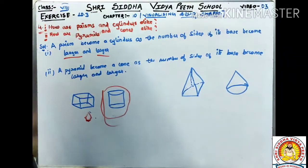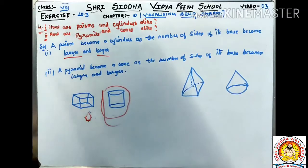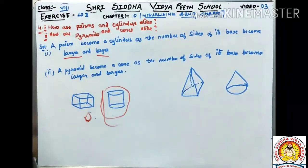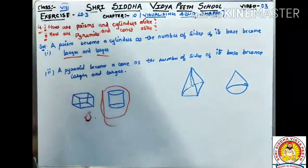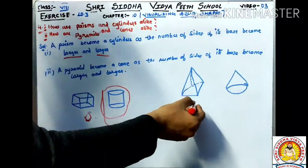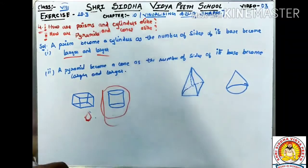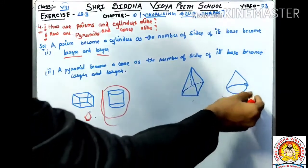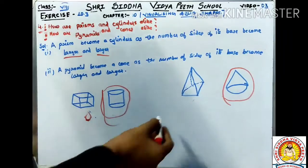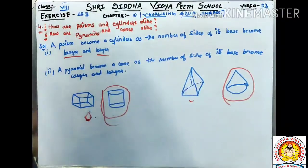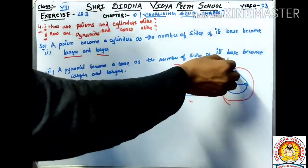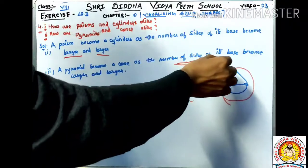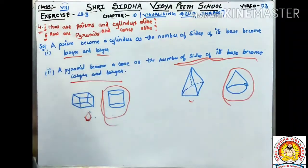The second part of Question 4 is: how are Pyramids and Cones alike? Pyramids and Cones are similar. When we take a pyramid and increase the number of sides of its base — 4 sides, 5 sides, 6 sides, and so on to infinity — it begins to look like a cone. So pyramids become a cone as the number of sides of their base becomes larger and larger.